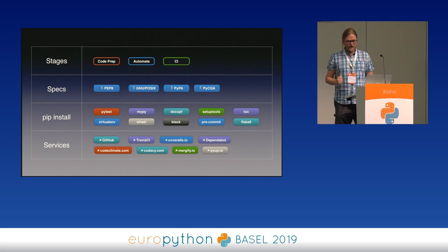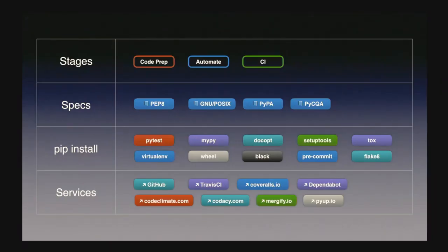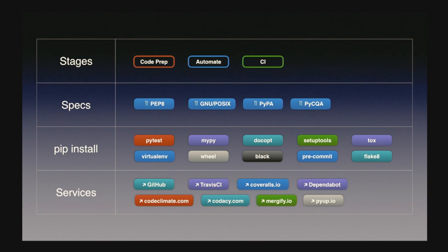And these are all the things that I found I needed to use. My slides will be tagged with little bubbles. The first set of bubbles shows you stages — first you need to prepare your code, then you can automate some things, and finally you can put all of this into a CI environment for continuous integration. The tags with a book icon show references for more information. The tags with no icon are just things you can pip install. And the tags with a little external link arrow are names of services that I will be talking about.